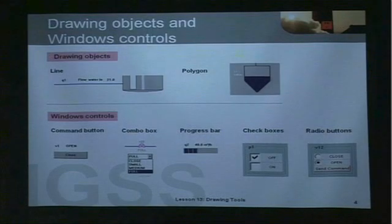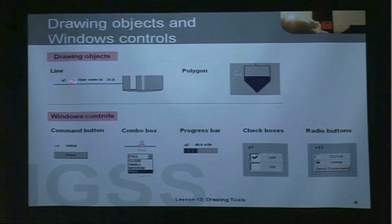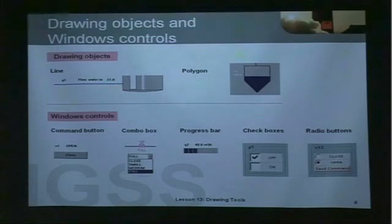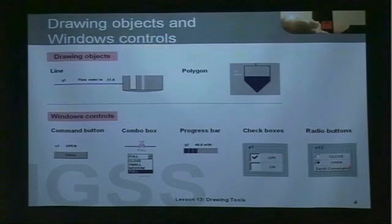What can you use this for? For example, if you have a flow meter Q1, you could connect this flow meter to a line in IGSS. You simply draw the line in IGSS and connect it to the object Q1. Then the line will reflect the process value of Q1 — if it's in alarm, for example, you can make the line blink. Right now it's just in the normal value section. Over here we have a polygon, which is exactly what you're going to be doing in the exercise that follows this presentation.